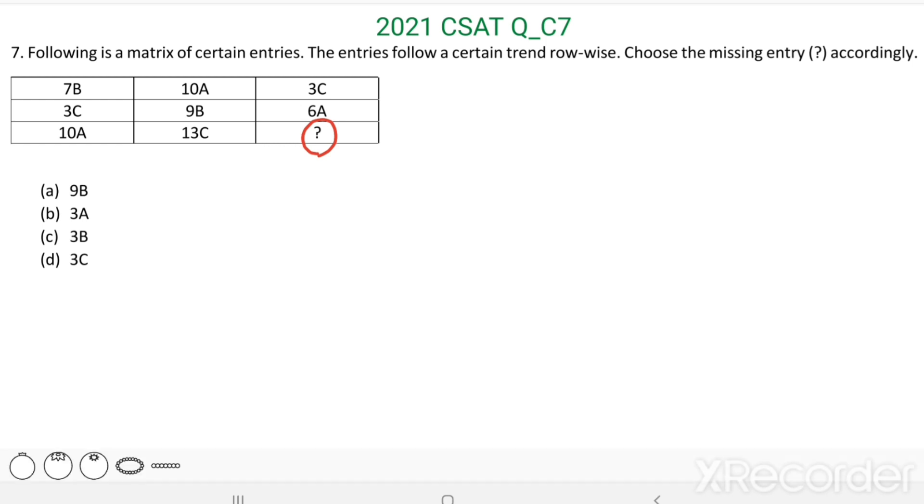Here we have a matrix. The entries follow a certain trend row-wise. That means this is row one, this is row two, this is row three.